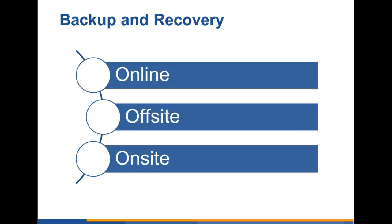Backup and recovery can be done online, off-site, or on-site. Online is typically done to the cloud, such as Amazon Web Services. Off-site could be shipment of physical media to another location — for example, daily tapes shipped to another company location where they are stored for three days before being taken off-site. On-site backup is risky if the location is very close to the primary server, but if kept in a sealed room away from the server, it can be an option, especially if your organization frequently needs to recover from backup.